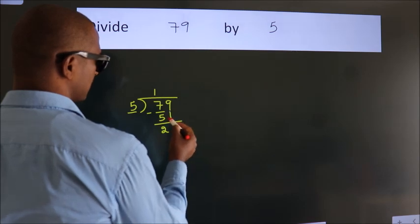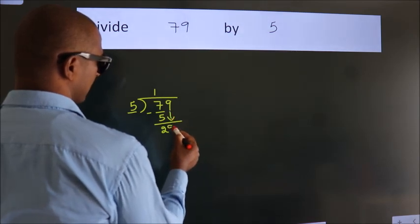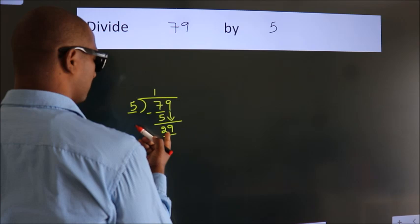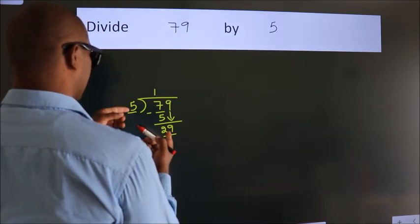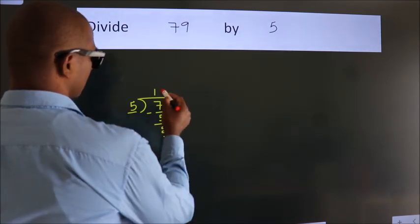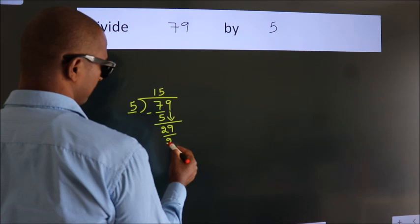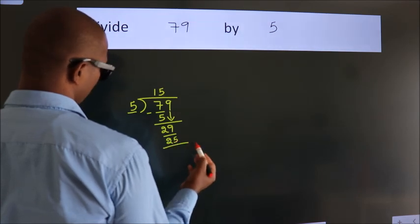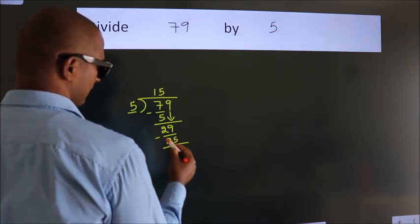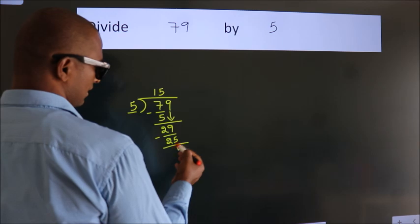After this, bring down the beside number. So 9 down, so 29. A number close to 29 in the 5 table is 5 fives 25. Now, we subtract. We get 4.